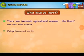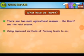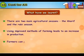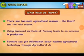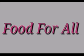What have we learnt? There are two main agricultural seasons: the Kharif and the Rabi season. Using improved methods of farming leads to an increase in production. Farmers can get information about modern agricultural technology through agricultural assistance programs. So, we have completed our lesson number 12 — Food for All. Thank you.